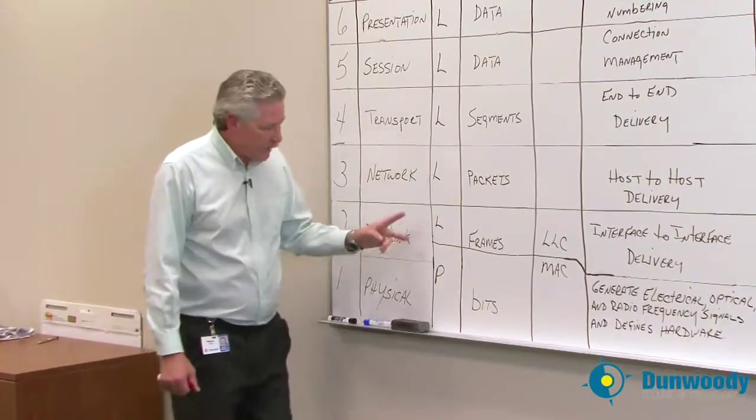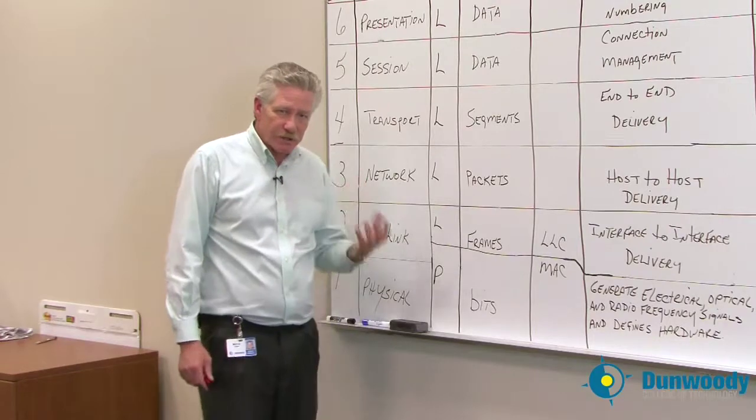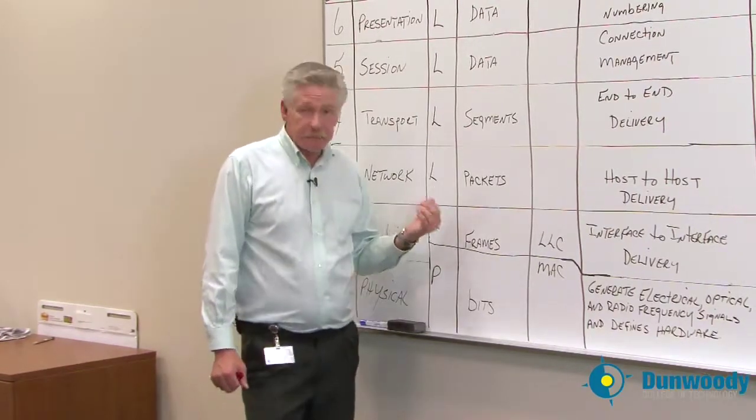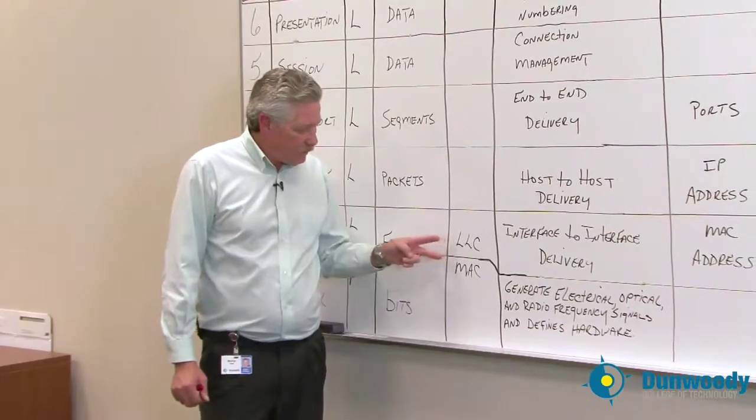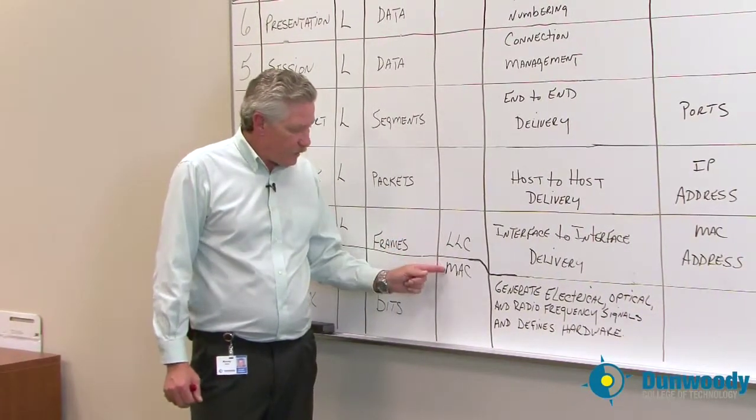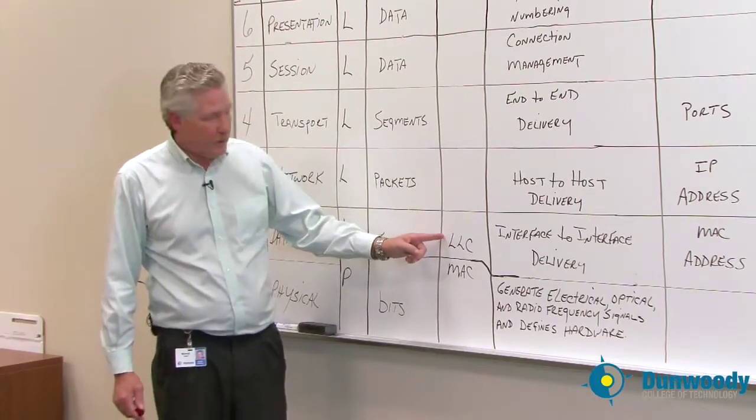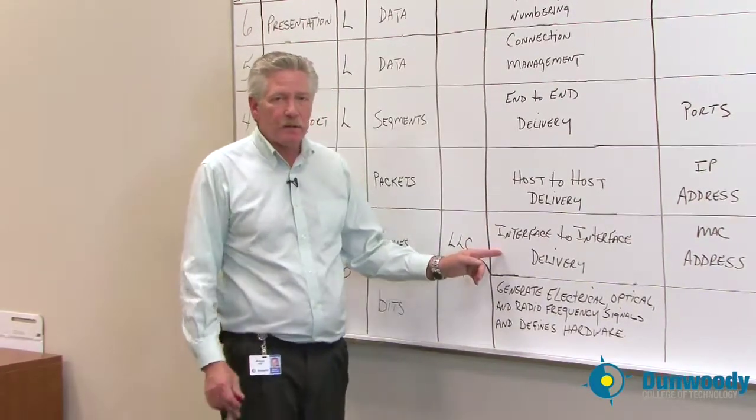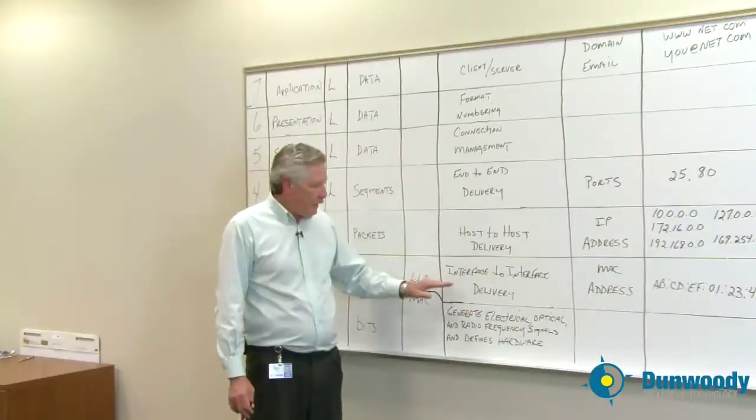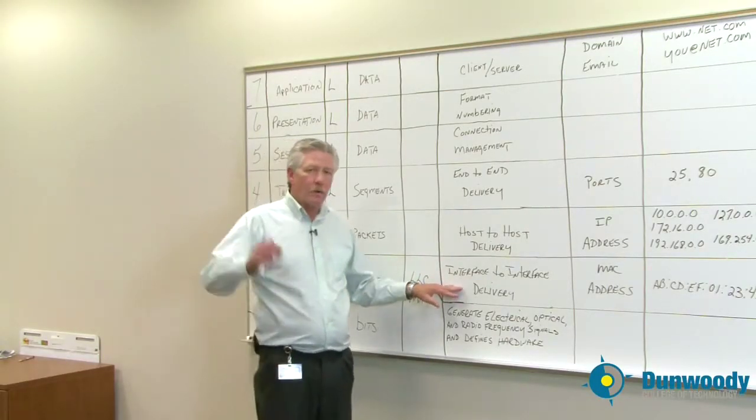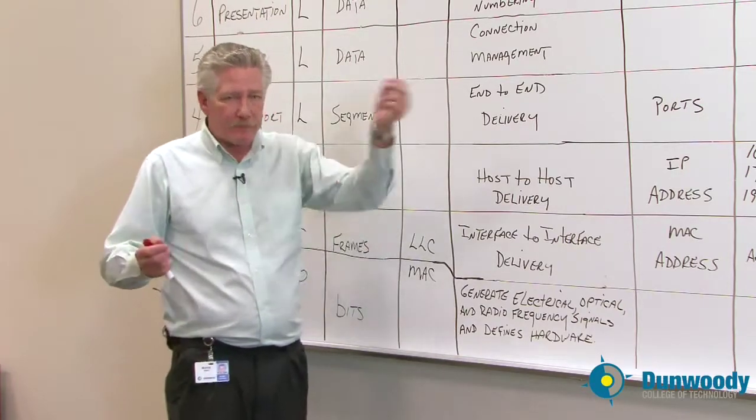The data link layer has actually two parts. It's both physical, it's a circuit board, and it's logical. It uses firmware to basically tell it what to do. So the data link layer has two sub layers. The MAC sub layer, which actually generates the electrical, optical, and radio frequencies. And the logical link control that creates message delineation, flow control, synchronization, and error control. And this does interface delivery. Where we're talking about from network interface card to network interface card. Example would be from a laptop to a two layer switch.